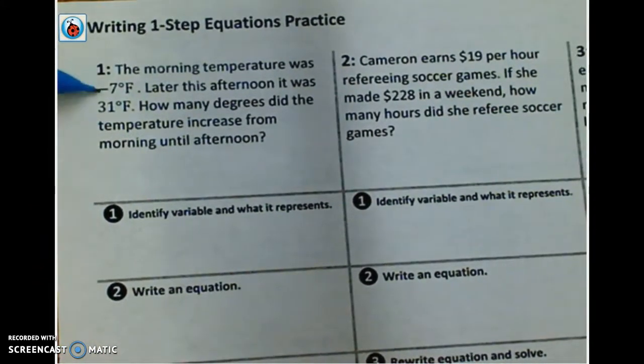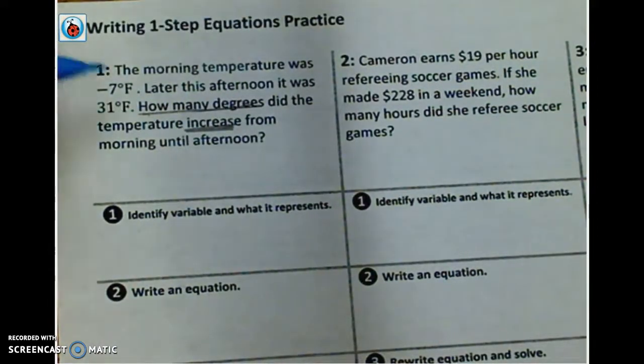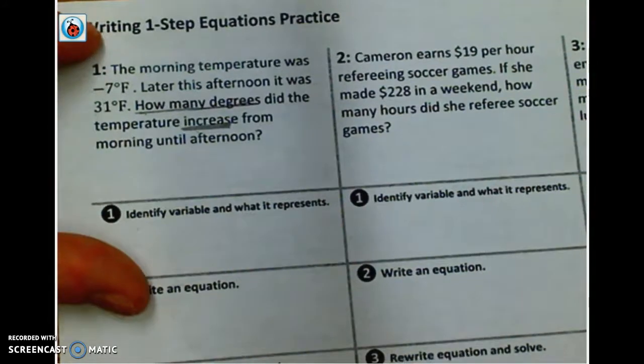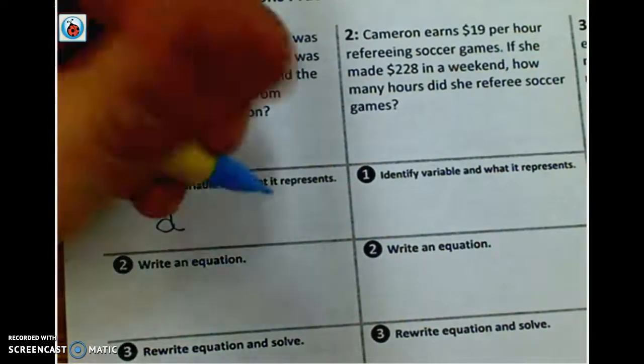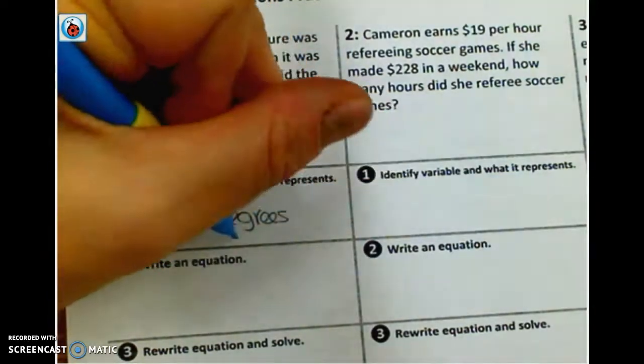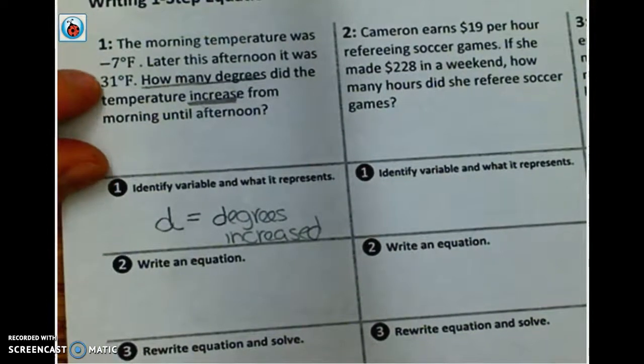And that we've actually, in fact, answered the question within the problem. So let's go ahead and take a look at the first one. Right? The morning temperature was negative 7 degrees Fahrenheit. Later this afternoon, it was 31 degrees Fahrenheit. How many degrees did the temperature increase from morning until afternoon? So we're looking for, right here, it says how many degrees did it increase? So we know that it started at negative 7, and the end result was 31. So we're basically looking for, well, it went up, so we're looking for well what did it go up by? So we don't know, and I'm going to use D for degrees. I'm not going to use T because it looks too much like a plus sign. So D for, and we're going to say that it's going to represent the degrees it increased. Because that's what the question is. The question is usually your variable.